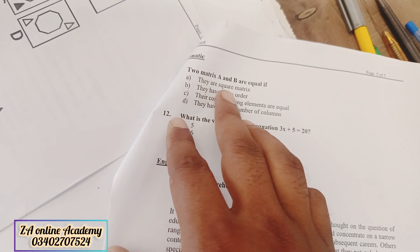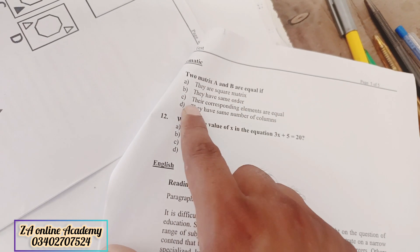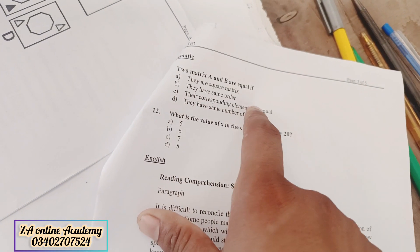This is a mathematical question. Two matrices A and B are equal if their corresponding elements are equal. Option C is correct.